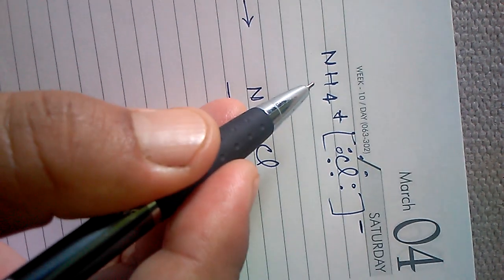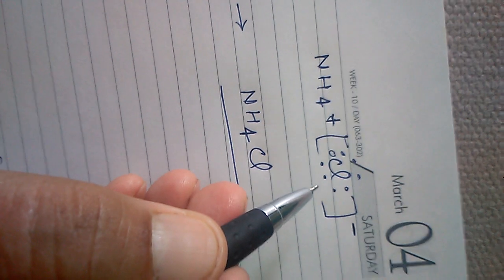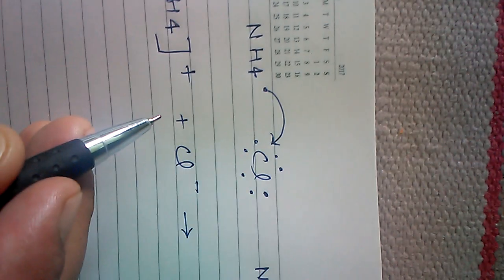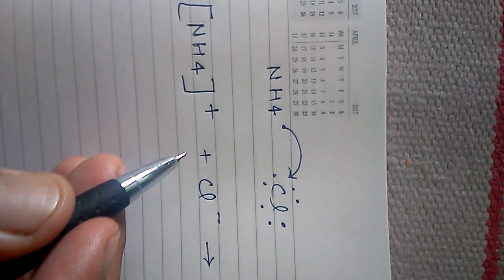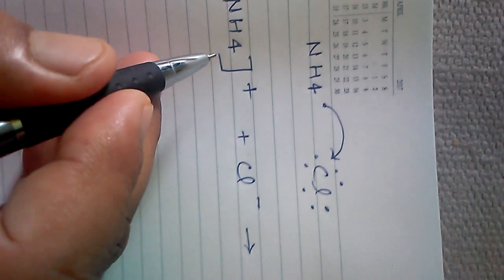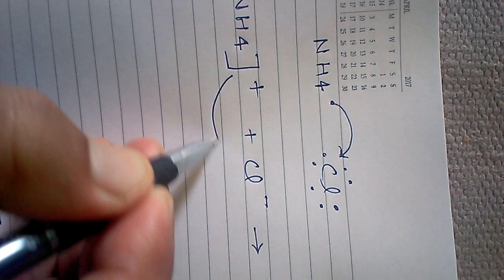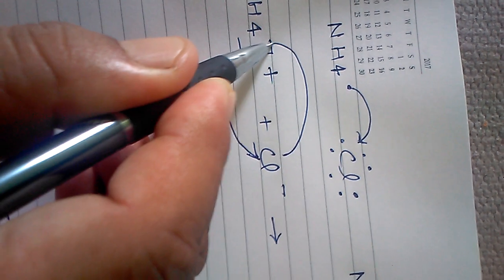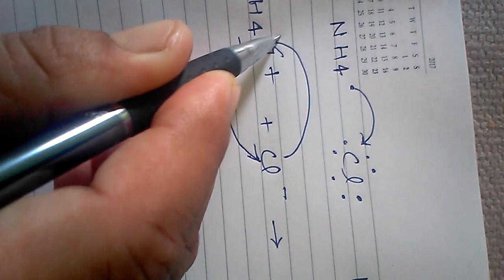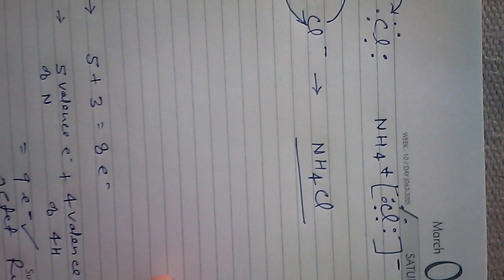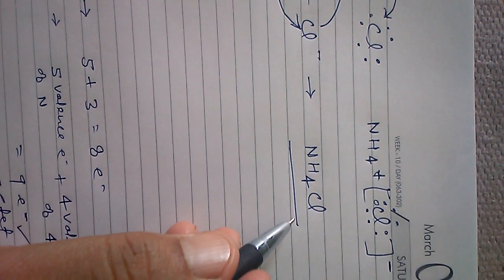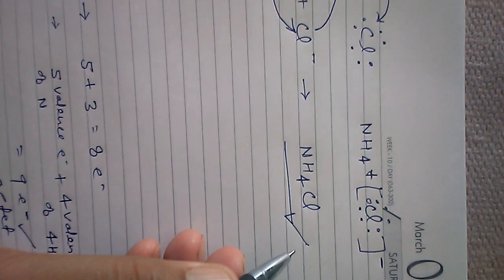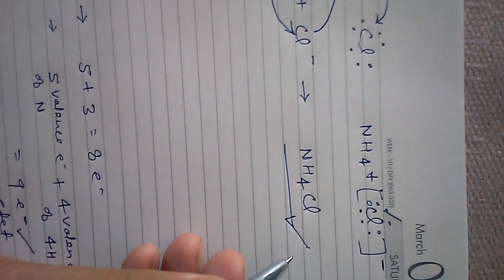Now we have NH₄⁺ and Cl⁻. When NH₄⁺ and Cl⁻ come together, they experience a special type of force of attraction — the electrostatic force of attraction — and this electrostatic force of attraction binds both ions, the ammonium ion and the chloride ion, to form the compound NH₄Cl, ammonium chloride.